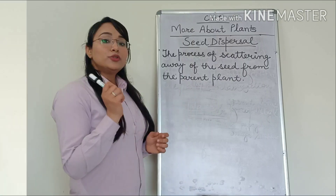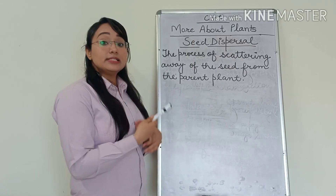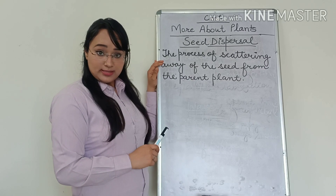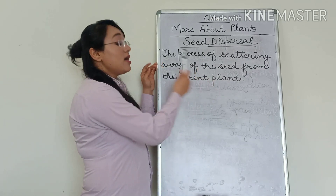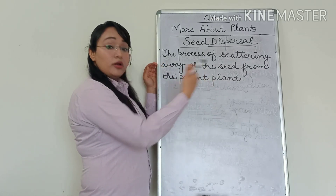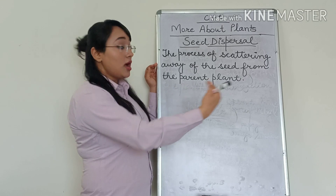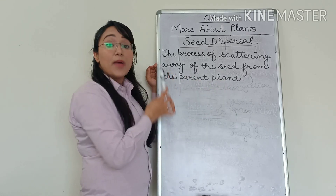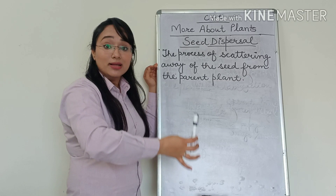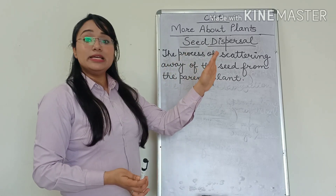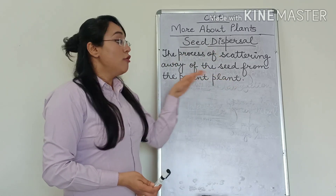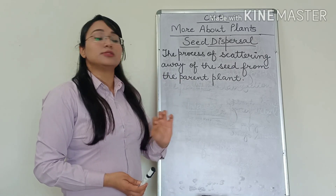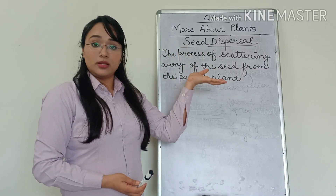This is how you can define seed dispersal: it is the process of scattering away or moving away of the seed from the parent plant. It is the movement of the seed to far-off places from the parent plant. This process is called seed dispersal.